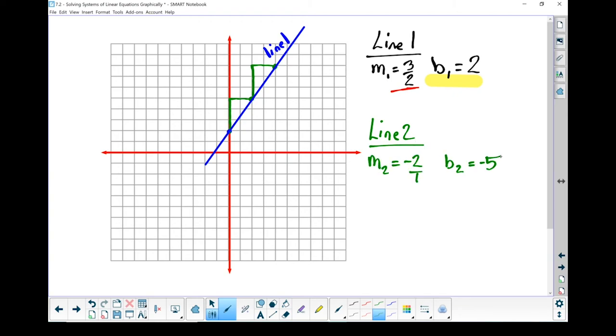All right, so we start with our y-intercept and it crosses at minus 5. So it's going to cross all the way down here. And my slope is minus 2 over 1. So it's a rise of minus 2 and a run of 1. So 2 down, 1 over. 2 down, 1 over.